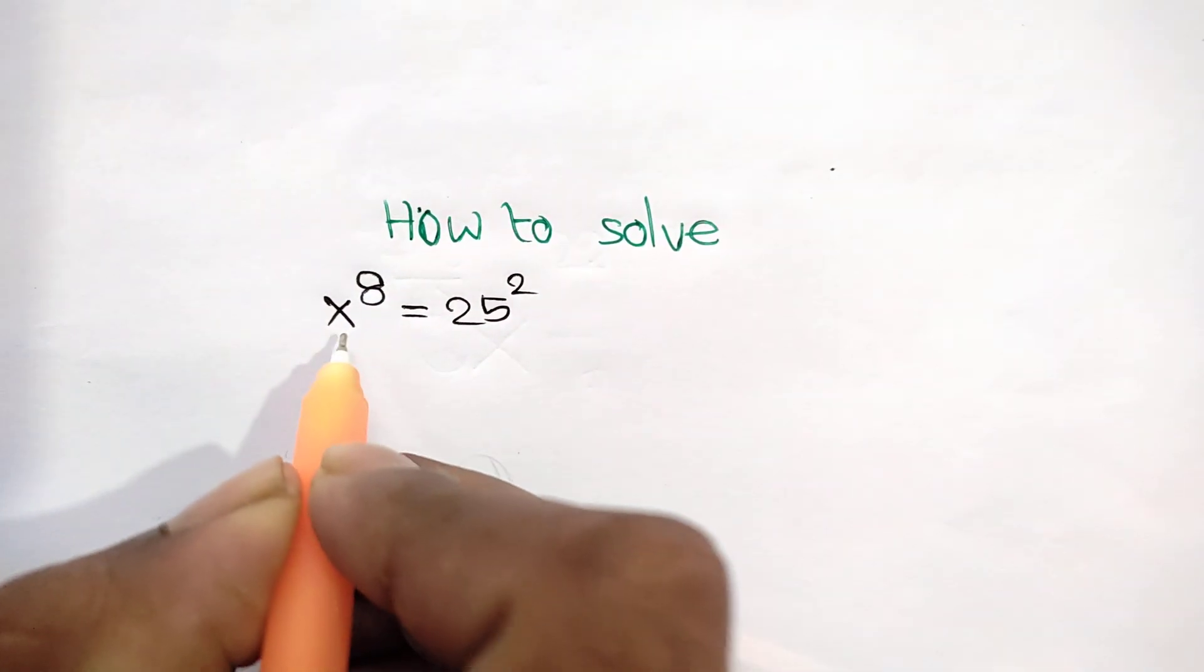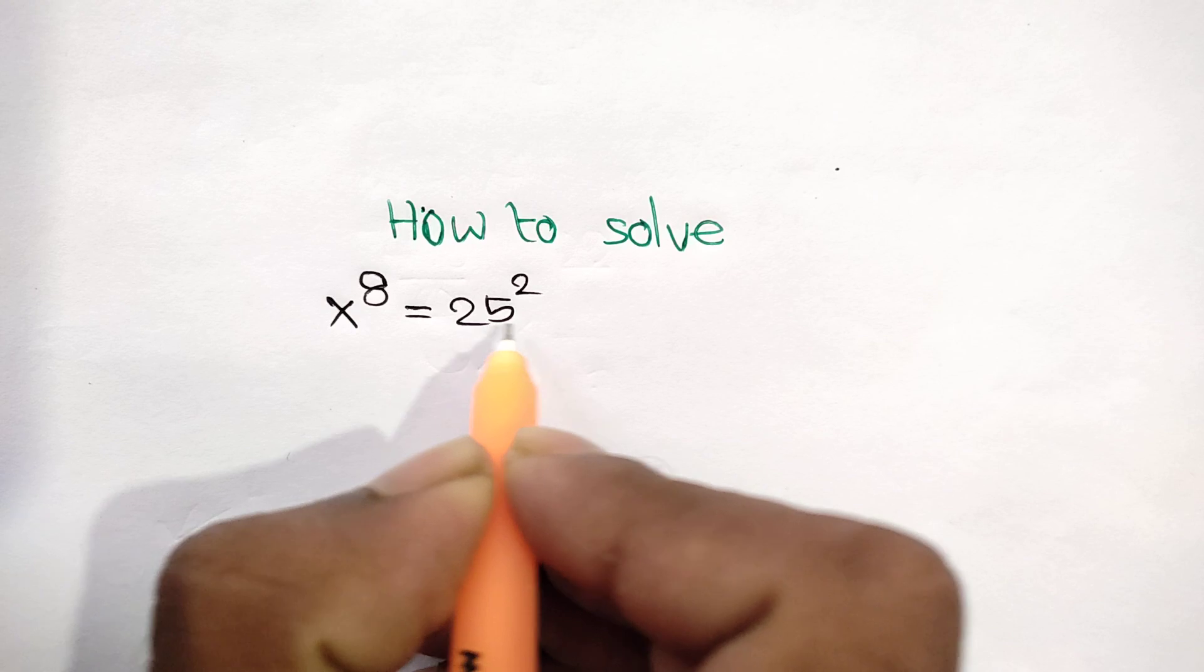Hi everyone. How to solve x to the power 8 equal to 25 square.